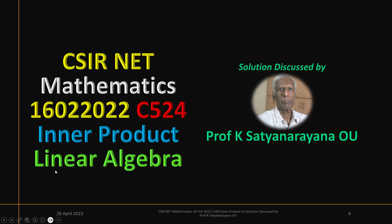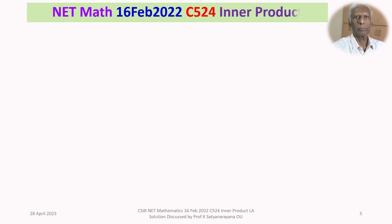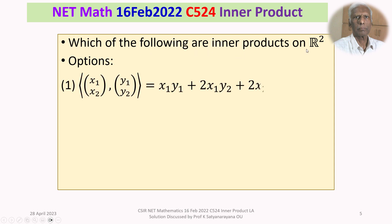We will now discuss the solution of a problem from the section Linear Algebra, and this problem is on the inner product. This question has appeared in the CSIR National Eligibility Test held on 16th February 2022, and it is from section C. The given problem is: which of the following are inner products on R square?